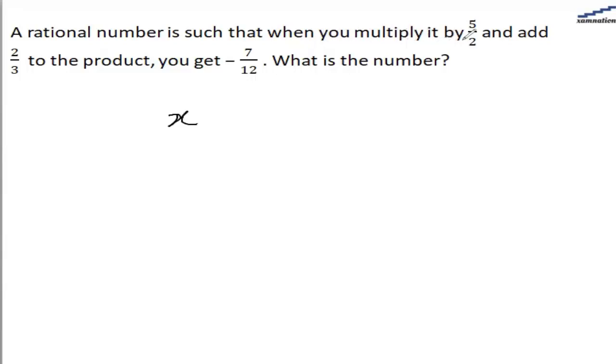So first step is when you multiply it by 5 by 2. So that means the product becomes 5 by 2x. And adding 2 by 3 to the product, you will get minus 7 by 12.